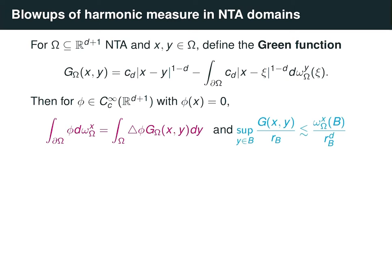The second fact says that given any ball on the boundary such that the point x is outside the double of this ball, the supremum of Green's function divided by the radius of this ball — the supremum inside the ball b — is at most the density of harmonic measure in this ball, that is, the harmonic measure of b divided by the radius of b to the power d.